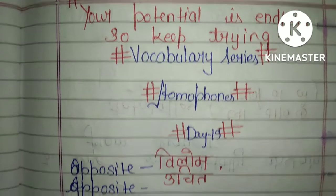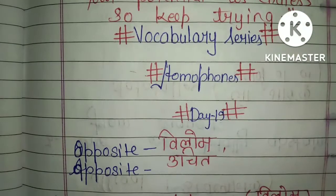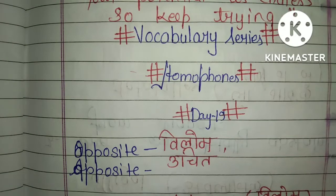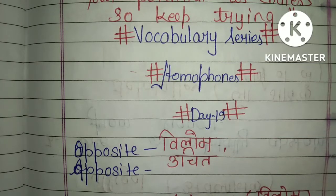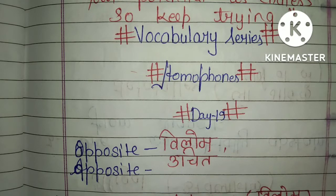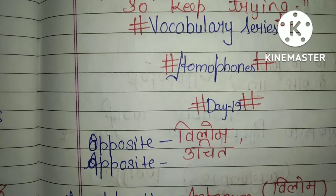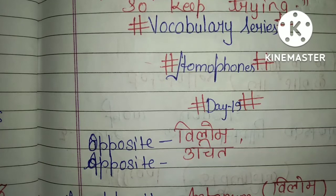So let's see the pair of words for today. Our pair of words is 'opposite' and 'apposite'. Opposite is spelled O-double-P-O-S-I-T-E and means विलोम (antonym) in Hindi. Apposite is spelled A-double-P-O-S-I-T-E and means उचित (appropriate/suitable) in Hindi.